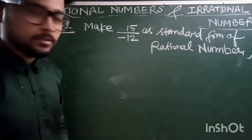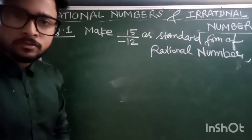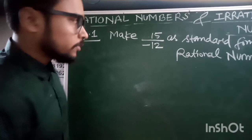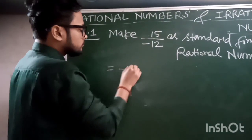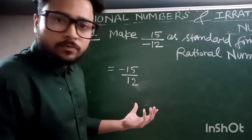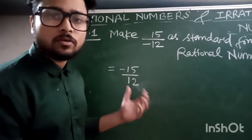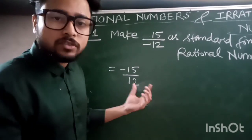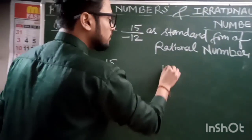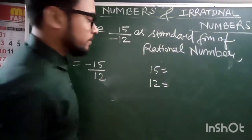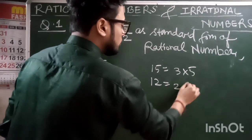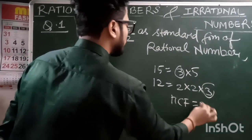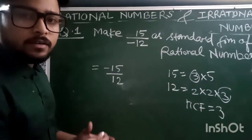Let's take an example: make 15 upon minus 12 into standard form. First, we check whether 15 and 12 are co-prime or not. Since both are divisible by 3, they are not in simplest form. We find the HCF of 15 and 12: 15 = 3×5 and 12 = 2×2×3, so HCF is 3. Dividing both numerator and denominator by 3, we get 5 upon minus 4.